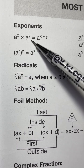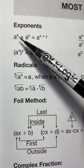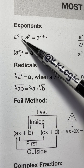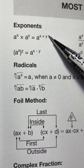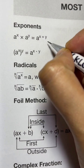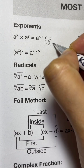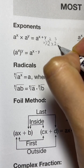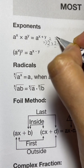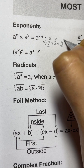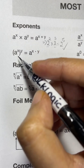When you have the same base — a to the power of x times a to the power of y — and you have multiplication between them, you add the powers: a to the power of x plus y. For example, two to the power of two times two to the power of three — same base, multiplication — so you add the powers: two to the power of two plus three, which is five.